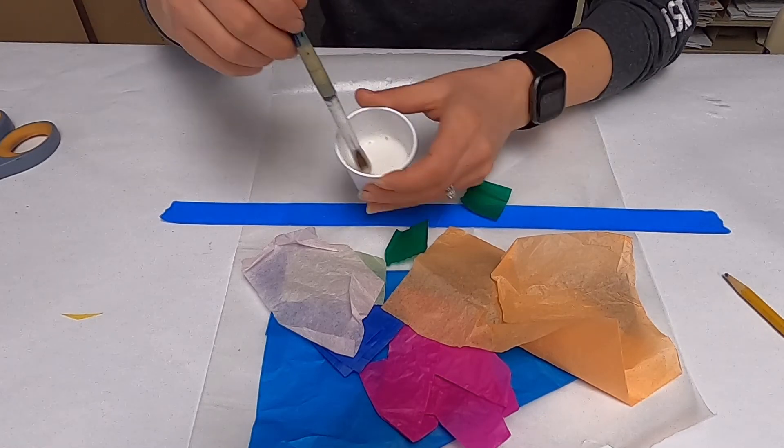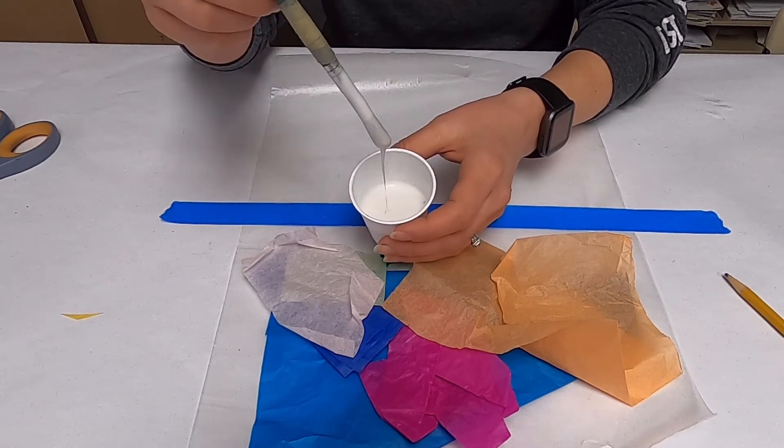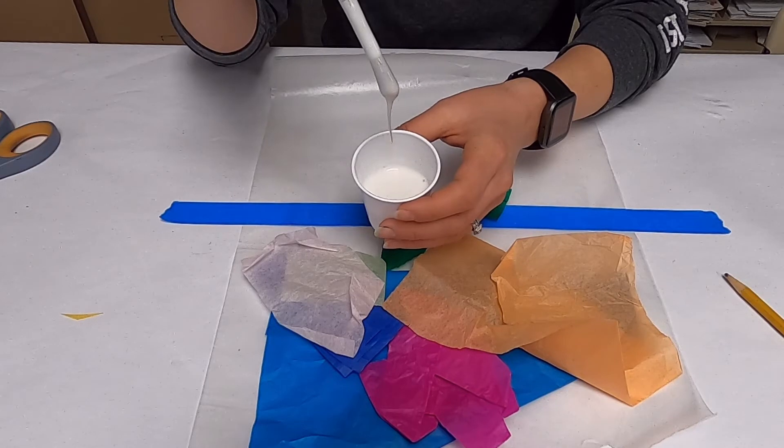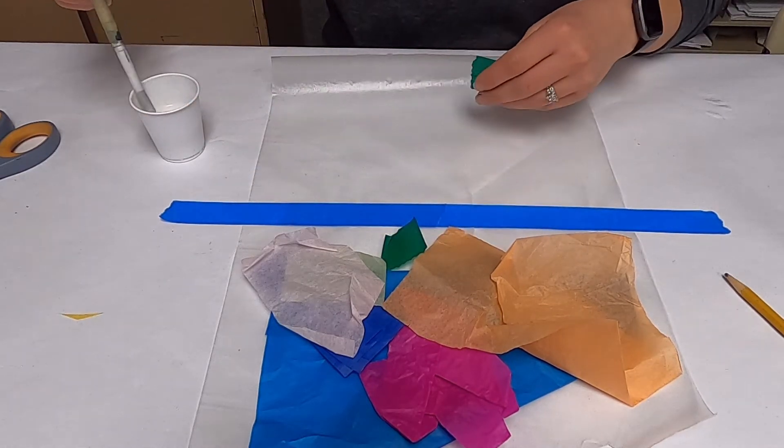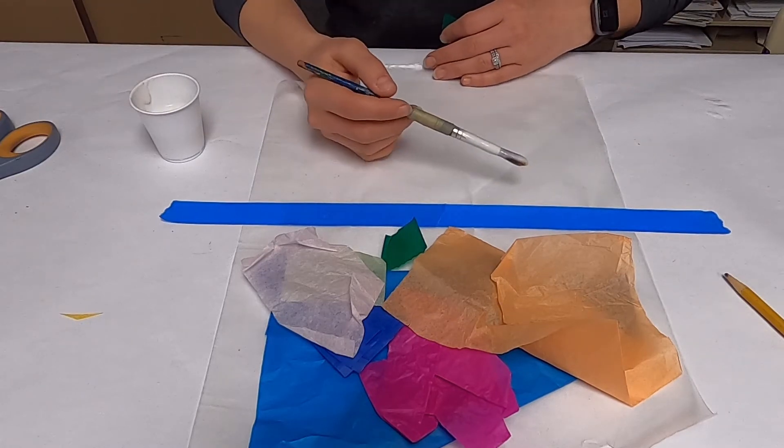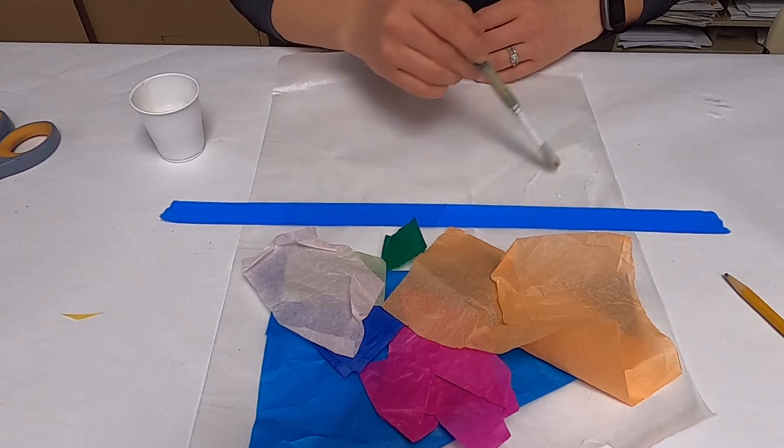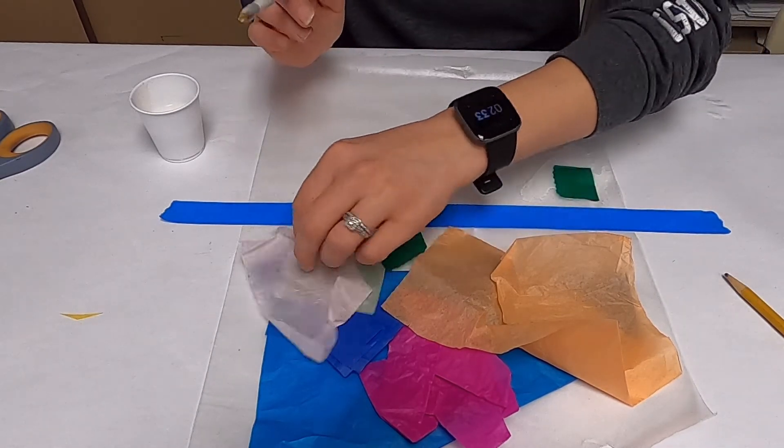I took regular glue and watered it down so it's a bit runny. You can use Mod Podge if you thin it out. Work in small areas - paint the glue on, stick the tissue paper on top, and keep going.